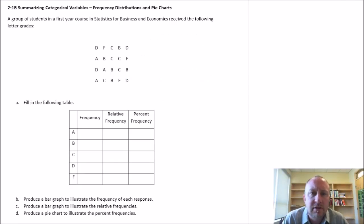Okay, we're going to do an exercise here to show us how to summarize categorical variables. As you may recall, a categorical variable is something that is either a nominal variable or ordinal variable. In this case we have a data set that consists of a sample of grades, letter grades for students in a first-year business statistics course.